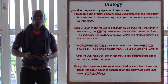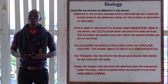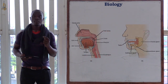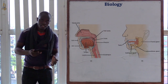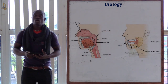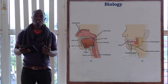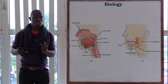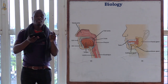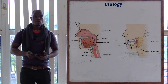Describe the process of digestion in the mouth. First of all, let's define what digestion is. Digestion is the process whereby food is mechanically and chemically broken down in the body for the absorption process to take place. If you have been asked to describe such a process, always define the word you have been asked to describe first.